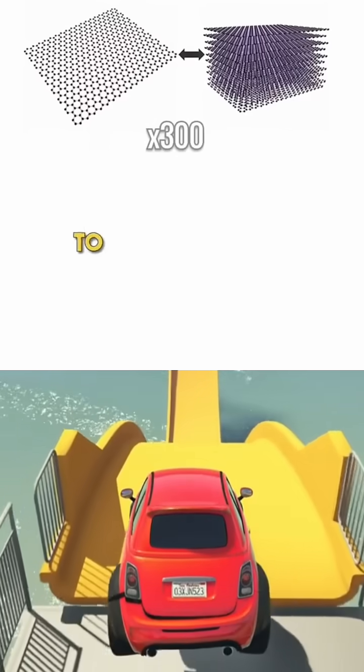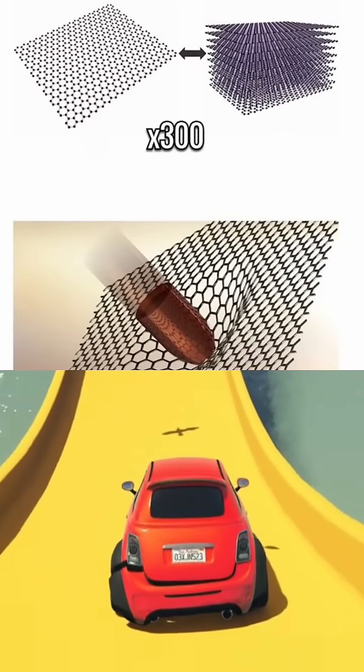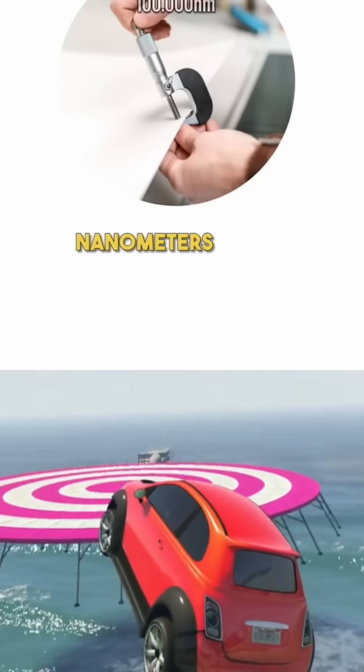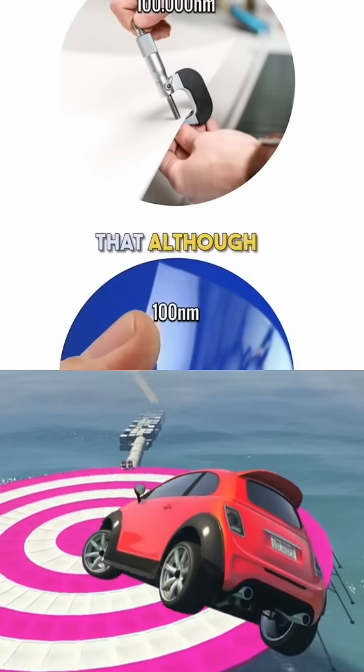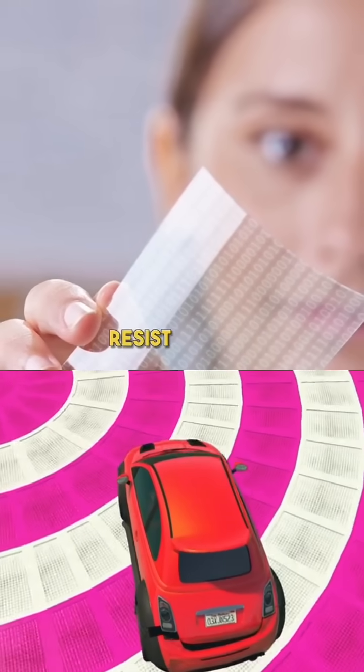For you to easily imagine, a normal sheet of paper has a thickness of 1,000,000 nanometers, and 300 layers of graphene is only 100 nanometers thick. This means that although this is just a film that is 1,000 times thinner than paper, it can completely resist bullets.